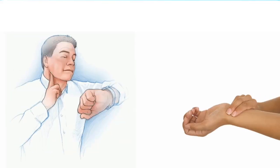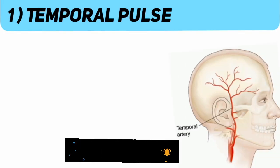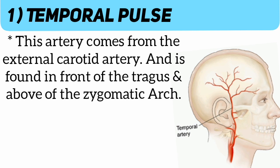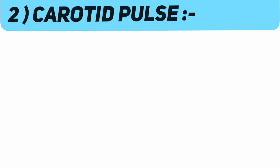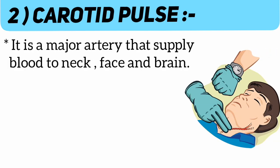Now we will explain these one by one. Number one: temporal pulse. This artery comes from the external carotid artery and is found in front of the tragus and above the zygomatic arch.